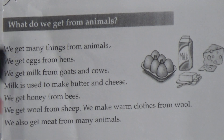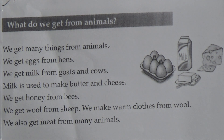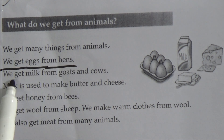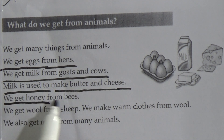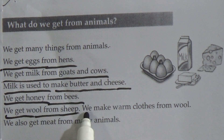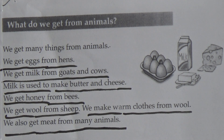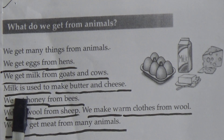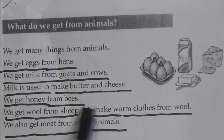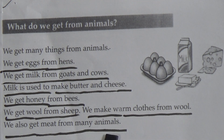What do we get from animals? We get many things from animals. We get eggs from hens. We get milk from goats and cows. Milk is used to make butter and cheese. We get honey from bees. We get wool from sheep. We make warm clothes from wool. We also get meat from many animals.